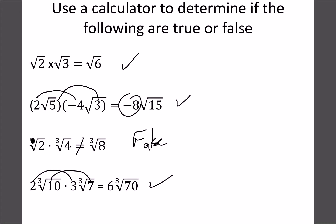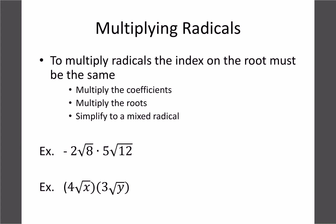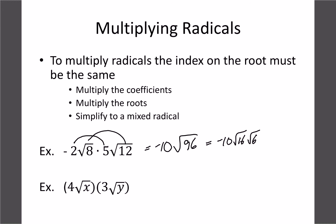With multiplying, the key rules are: multiply the outside coefficients — the regular whole numbers — and if there's nothing there, think of it as a 1. Then multiply the roots. Last, simplify as much as possible. For this first example, 5 times negative 2 is negative 10. Then 8 times 12 is 96. To simplify root 96, we change it to 16 and 6, and root 16 is 4. So our final answer is negative 40 root 6.